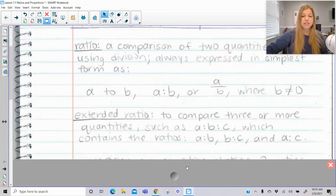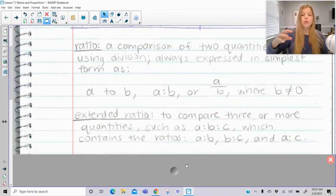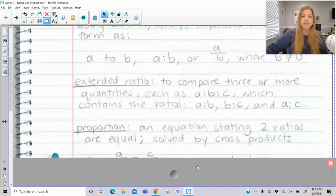An extended ratio is where we compare three or more quantities, such as A to B to C. Now this is new, so you've already learned about a ratio for years now, but now an extended ratio compares more than just two items. So A to B to C contains the ratios A to B, B to C, and A to C, which should remind you about the transitive property. If I have a comparison here, then I really have these three built-in ratios in that extended ratio.